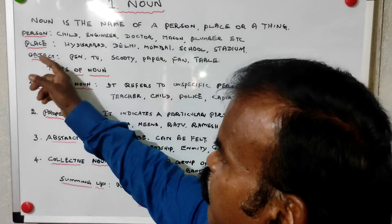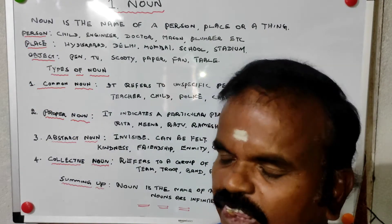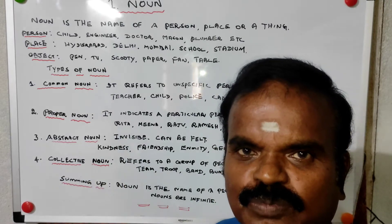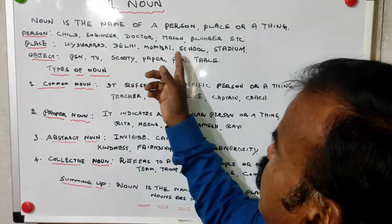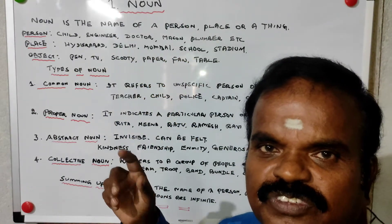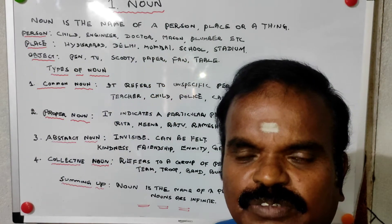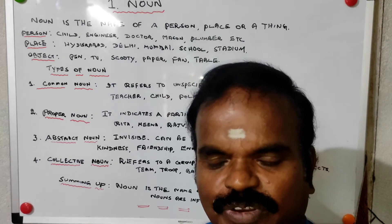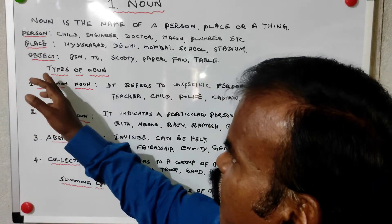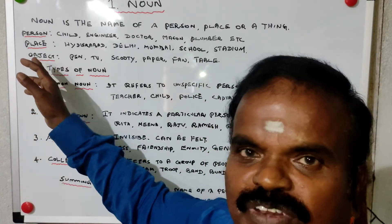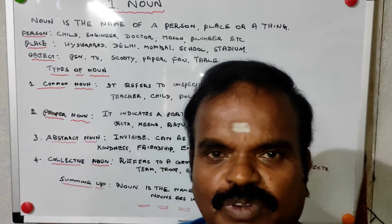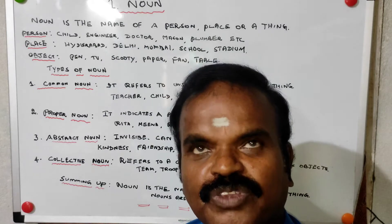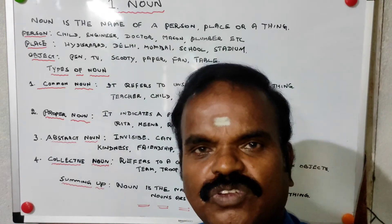Next, noun is the name of a place — any place. For example: Delhi, Hyderabad, Mumbai, school, stadium, playground, field, road. Noun is also the name of a thing or an object — material. By sitting in your room, you can write thousands and thousands of items.